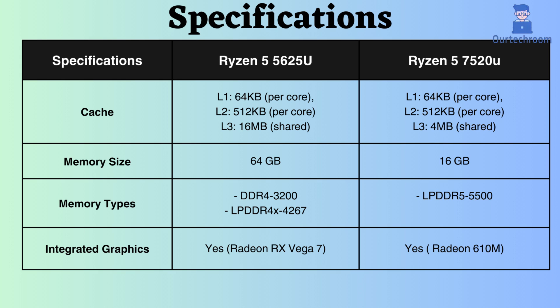The Ryzen 5 5625U supports up to 64 GB of RAM, whereas the Ryzen 5 7520U supports only 16 GB. The Ryzen 5 5625U, with its greater RAM support, can handle and address a larger amount of system memory. The Ryzen 5 5625U supports DDR4 and LPDDR4, while the Ryzen 5 7520U supports LPDDR5 RAM modules. Additionally, LPDDR5 supports a higher frequency of RAM than that supported by the Ryzen 5 5625U.